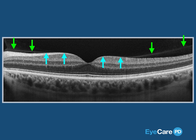It is normal in youth for the vitreous to be firmly attached to the inner retina. Similarly, it is normal with age for the vitreous to be detached from the inner retina, a so-called posterior vitreous detachment. But there is a spectrum of gray in between fully attached and fully detached.